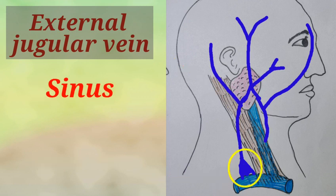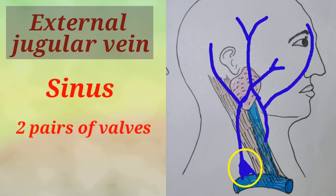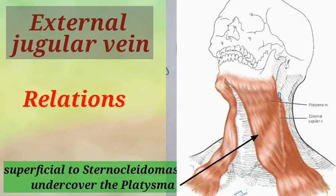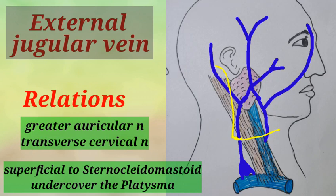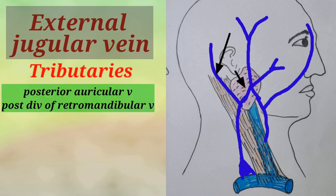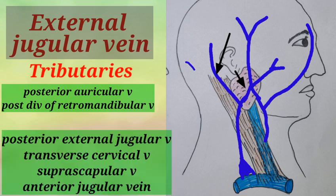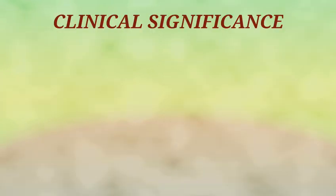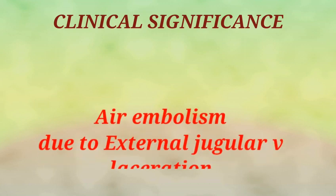The vein has a dilatation about four centimeters above its termination, called the sinus, and during its course it has two pairs of valves. It lies superficial to the sternocleidomastoid and under cover of the platysma. The greater auricular nerve passes lateral to the vein, and the transverse cervical cutaneous nerve passes deep to the vein. The formative tributaries are the posterior auricular vein and the posterior division of the retromandibular vein. Other tributaries include the posterior external jugular vein, and near its termination it receives the transverse cervical vein, suprascapular vein, and the anterior jugular vein through the oblique vein.